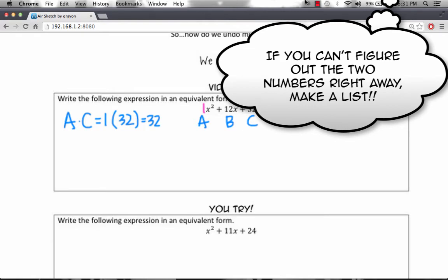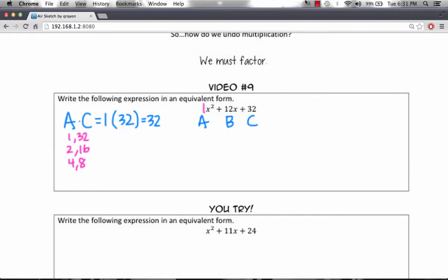We can list out all of the factors of 32 in pairs. So 1 and 32, we have 2 and 16, we have 4 and 8, and that's it.